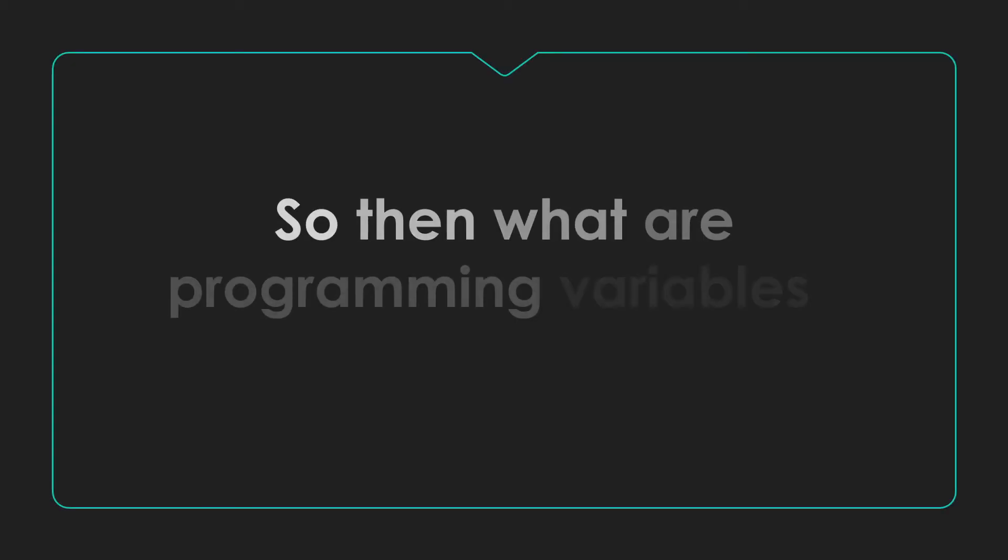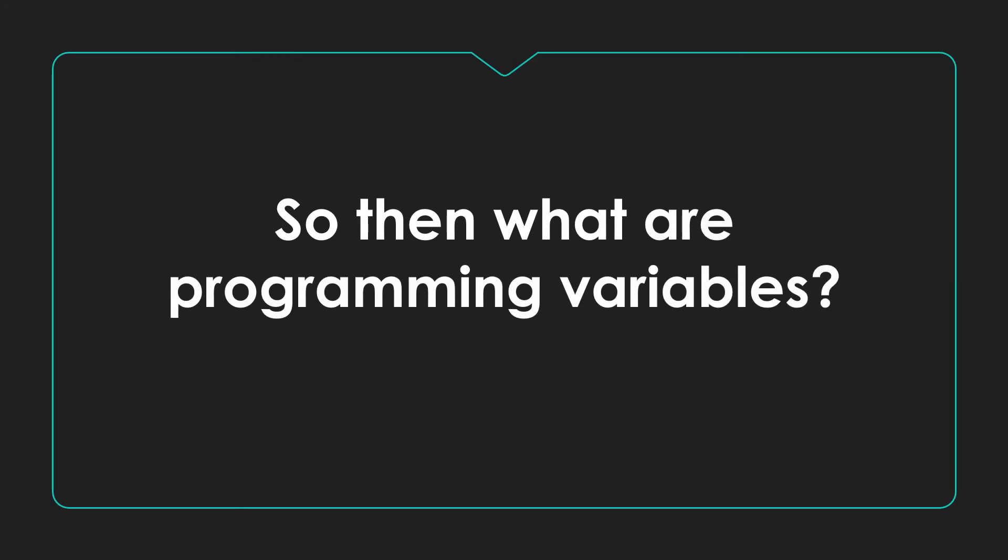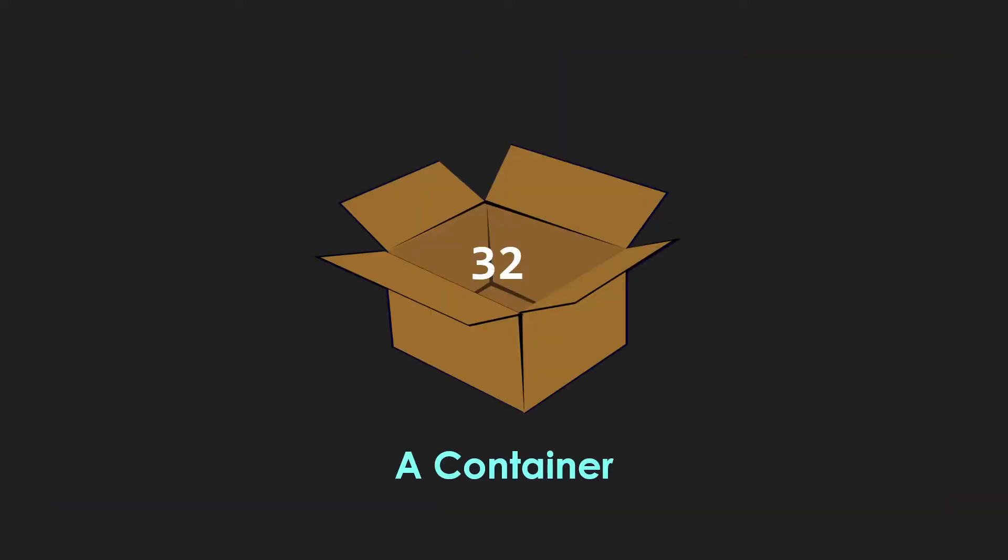So then what actually are our variables in programming? They're containers. So you can think of them as being kind of like a cardboard box that holds different kinds of values, like numbers, letters, names, whole strings.